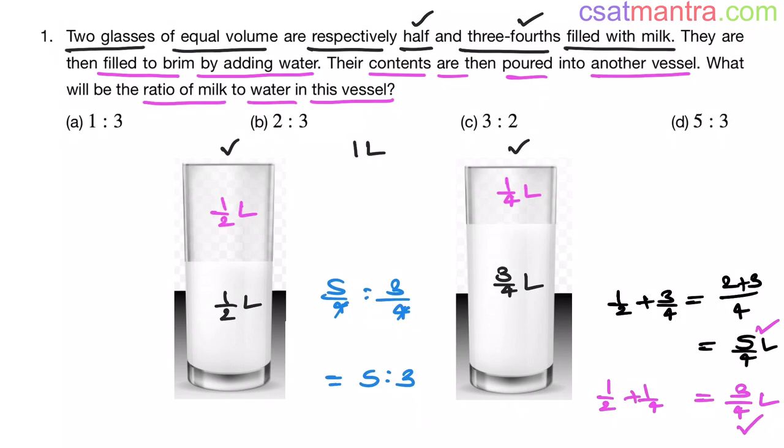This problem is from mensuration chapter, asked in 2011. This problem actually involves ratios and proportions concepts. This is the very reason we are saying ratios and proportions, number system, algebra, and percentages chapters are very important. So kindly master them.